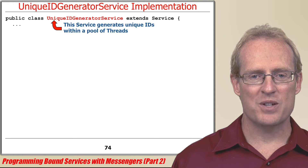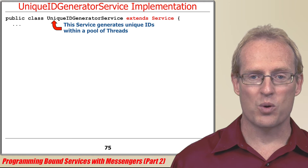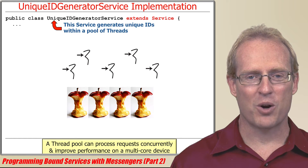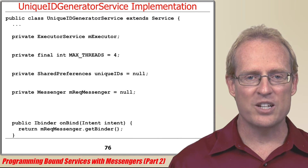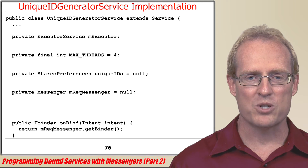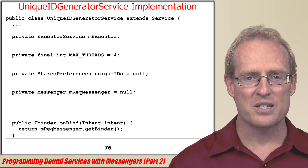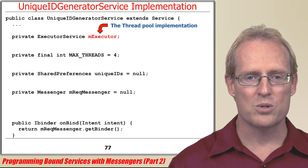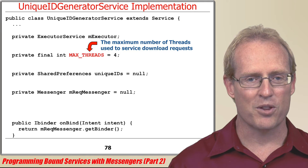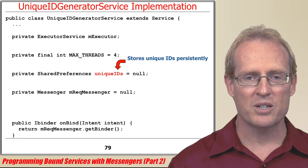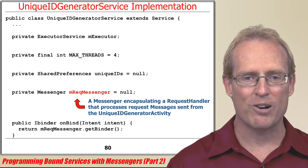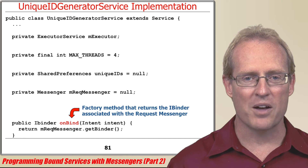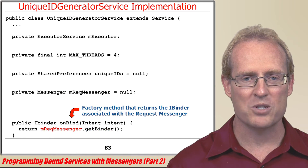The unique ID generator service extends Service and generates unique IDs within a pool of threads, which enables multiple client requests to run concurrently and can improve performance on a multi-core device. Unique ID generator service defines several data members, including the executor service implementation that provides a thread pool used to service client requests, the maximum number of threads in that pool, a shared preferences object that stores unique IDs persistently, and the messenger that receives request messages sent from the unique ID generator activity. The onBind factory method returns the iBinder associated with this request messenger when the activity binds to the unique ID generator service.